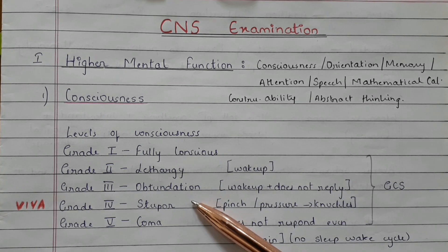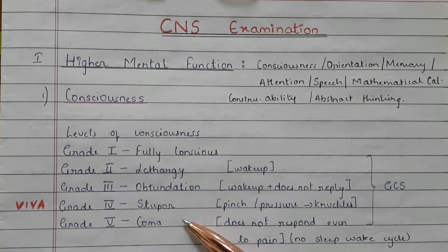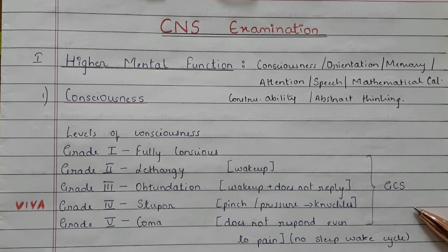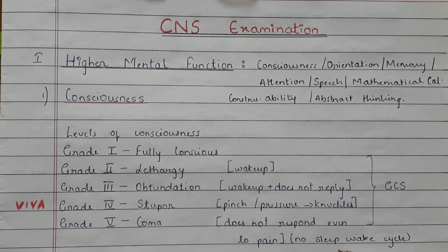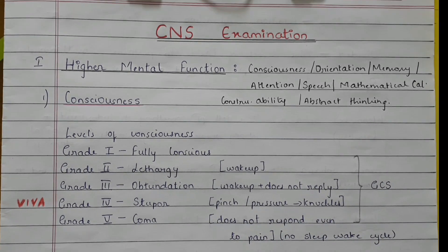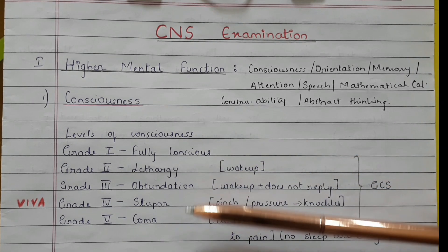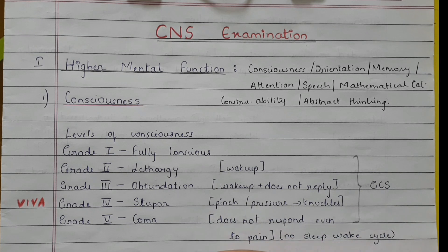An important viva question: what is the difference between grade 4 and grade 5 of consciousness? In grade 4, which is stupor, the sleep-wake cycle is present. Whereas in grade 5, which is comatose, the sleep-wake cycle is absent. If the patient falls among any of the grades from 2 to 5, you need to make use of the GCS scale, which is the Glasgow Coma Scale.